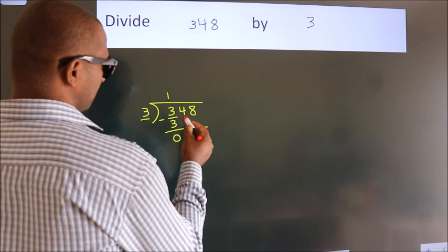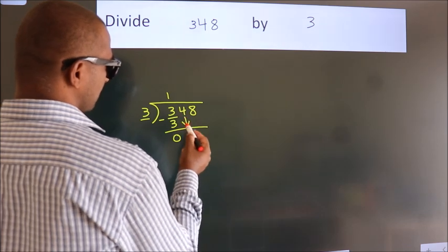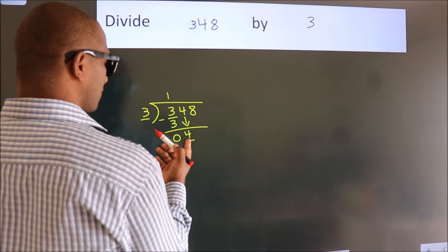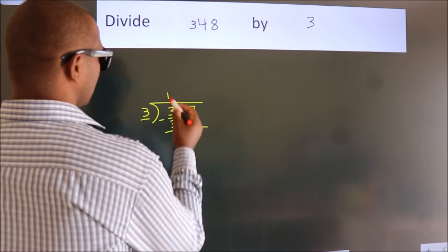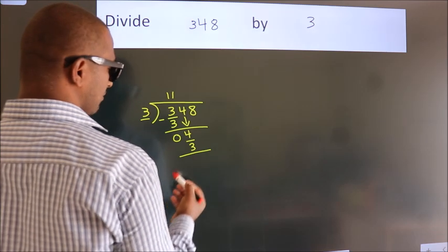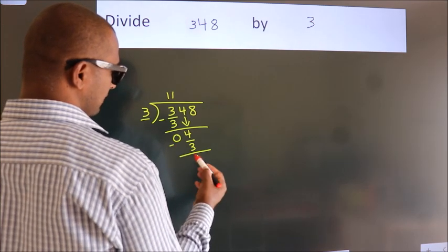After this, bring down the next number, so 4 down, so 4. A number close to 4 in the 3 table is 3 once, 3. Now we subtract and we get 1.